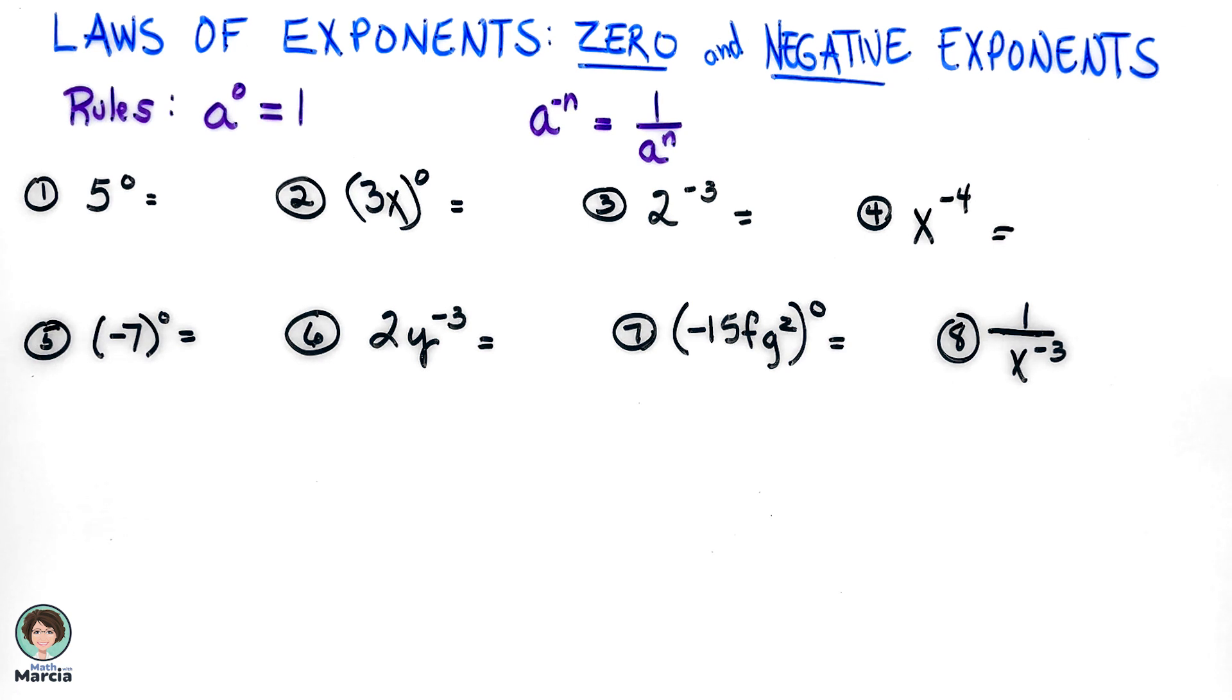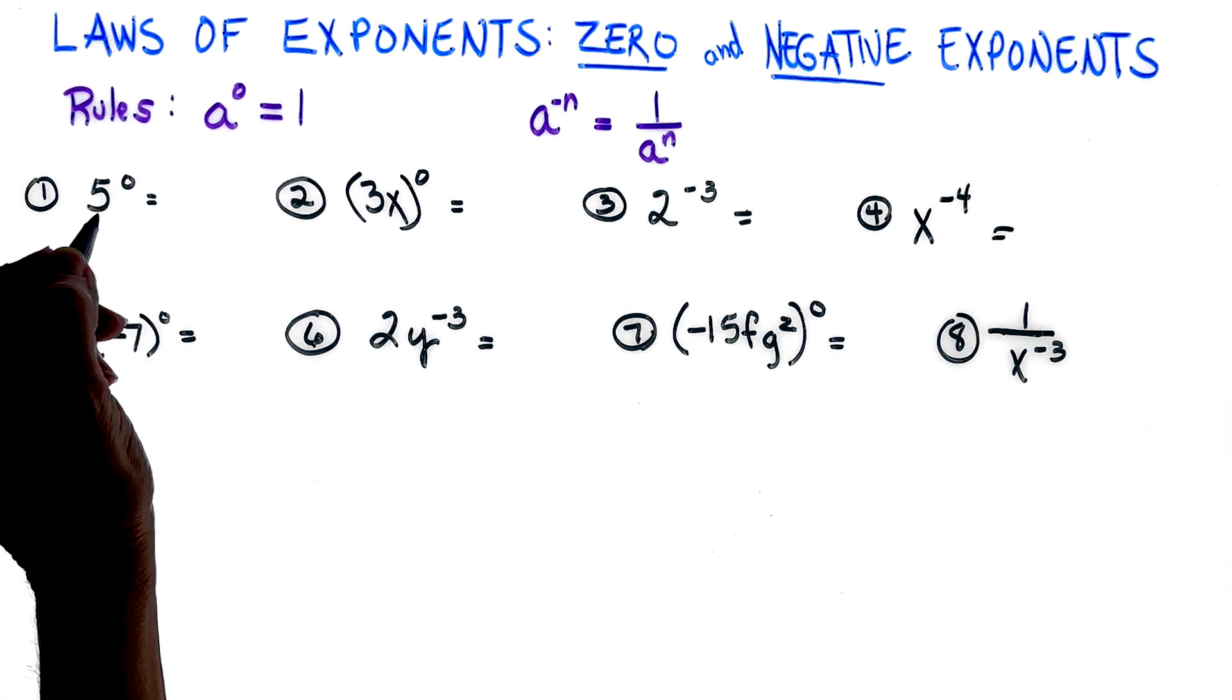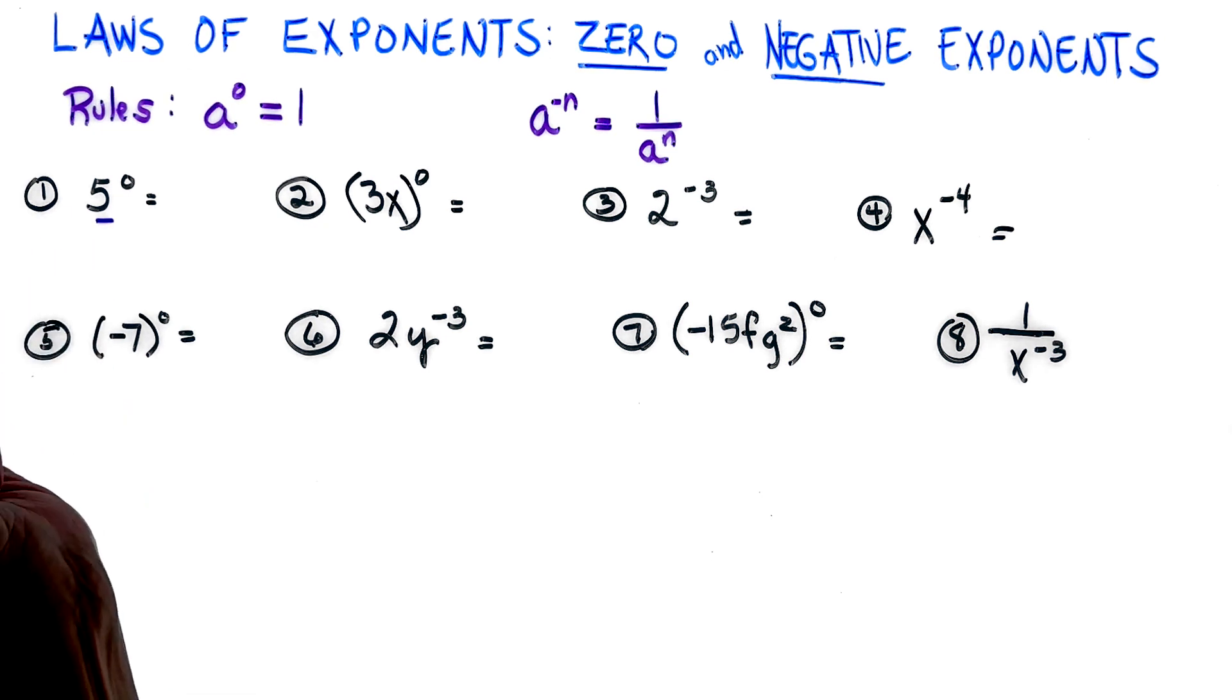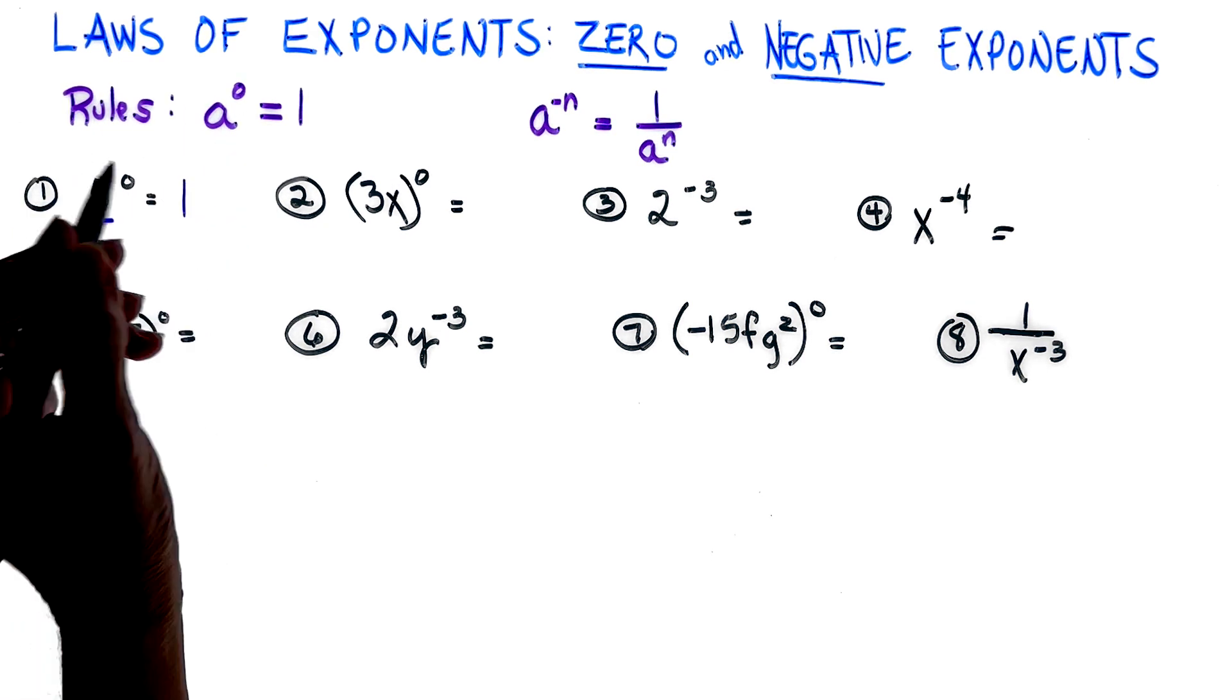All right, so let's apply these rules to a few problems. If I have five to the zero power, again, there's my base, zero power—my answer is one.